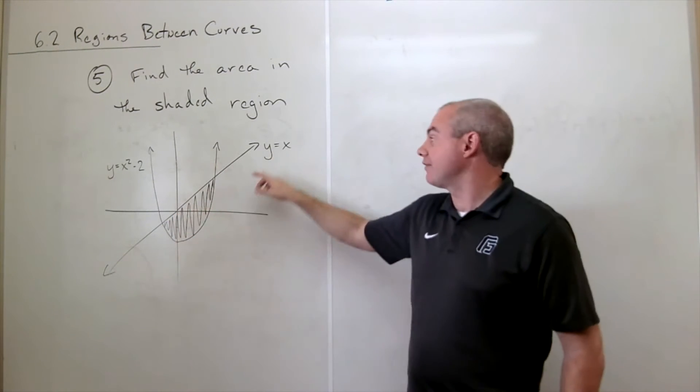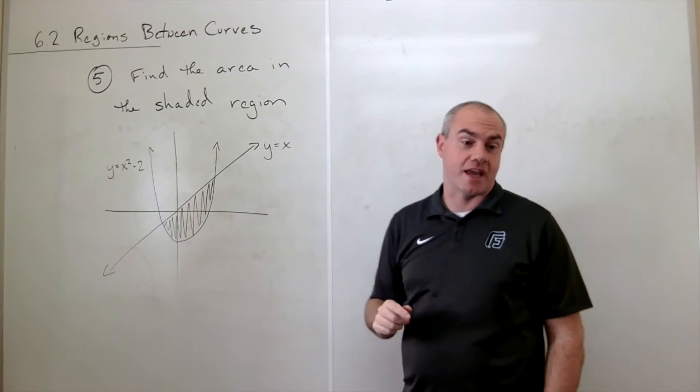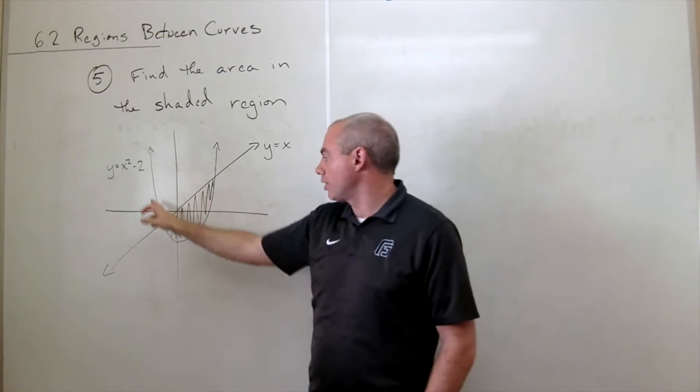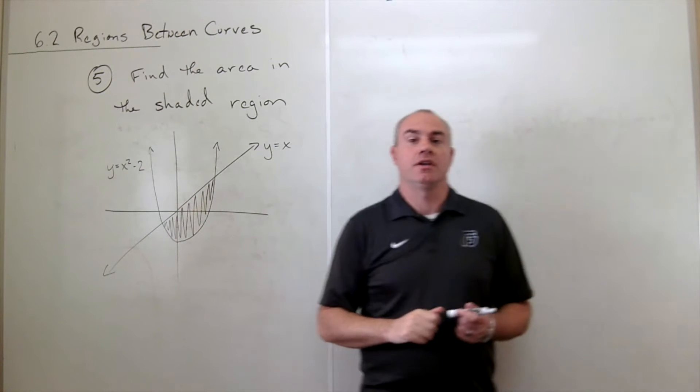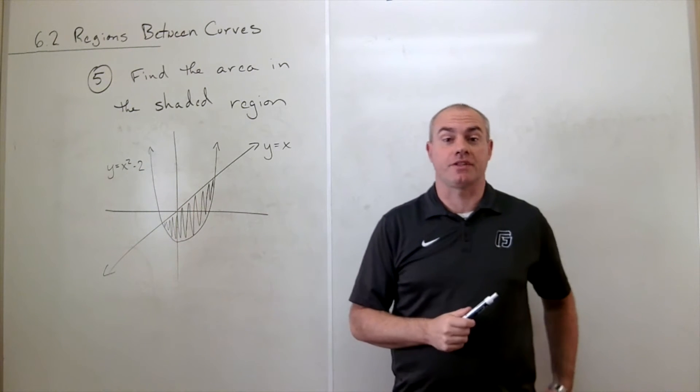So the upper curve we have here is y equals x and the lower curve here is y equals x squared minus two. And we'd like to find the area between these two curves.